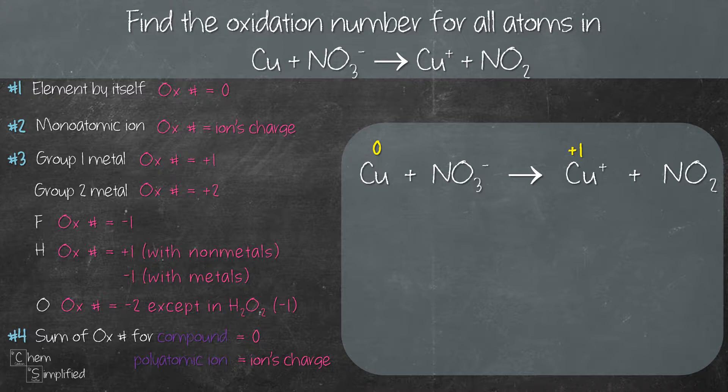Moving on to rule number three. Oxygen usually has an oxidation number of minus two except for in peroxide. We have two oxygens here and both of them are not in peroxide. So that means the oxidation number for both oxygens is going to be minus two.